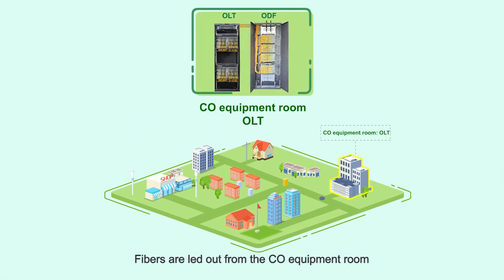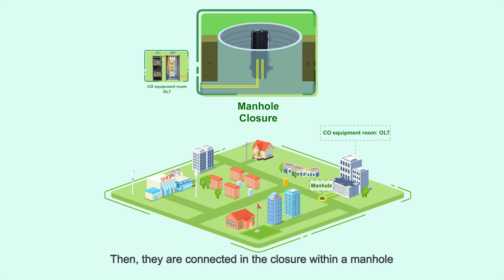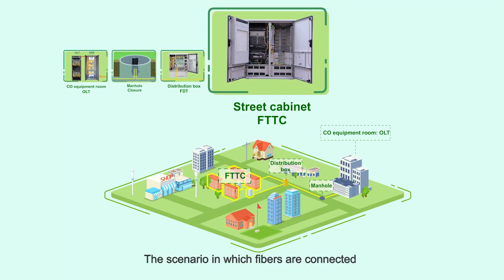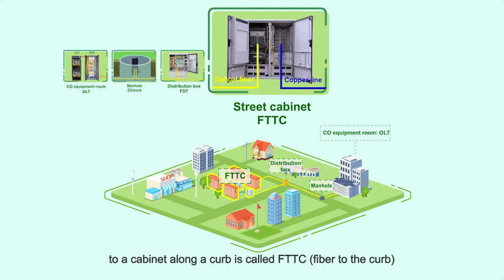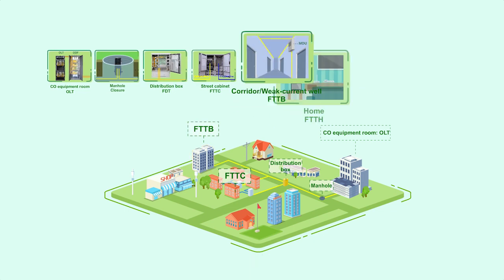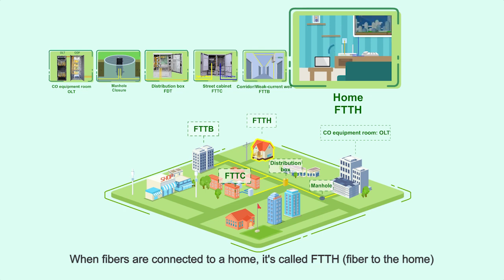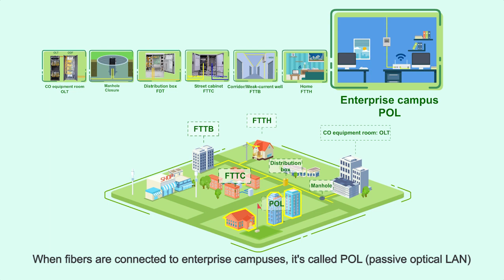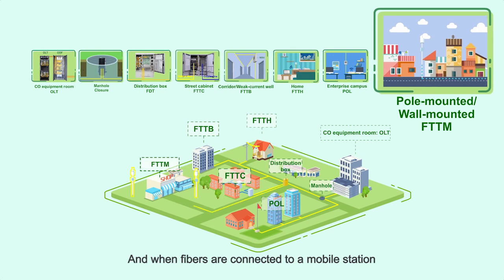Fibers are let out from the CO equipment room, then connected in the closure within a manhole and distributed through the distribution box. The scenario in which fibers are connected to a cabinet along a curb is called FTTC. When fibers are connected to a building it is called FTTB. When fibers are connected to a home it is called FTTH. When fibers are connected to enterprise campuses it is called POL, and when fibers are connected to a mobile station it is called FTTS.